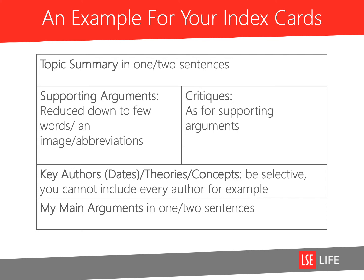You could start with a summary of the topic in one or two sentences. You can bring in the supporting arguments and the critiques, but again, reducing these down to a few words, images, and abbreviations. You can list some key authors, their dates, the theories and concepts — but be selective, you can't include every author. We've given you purposefully a small amount of space. And you can summarise what your main argument is in one or two sentences.